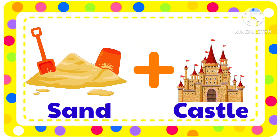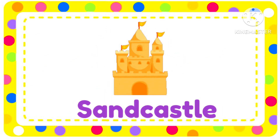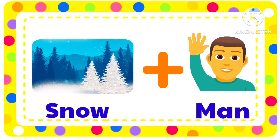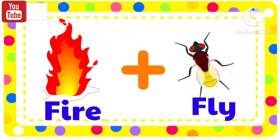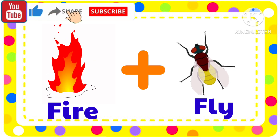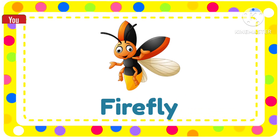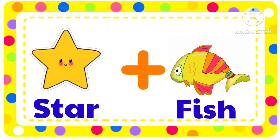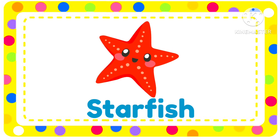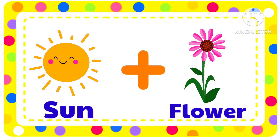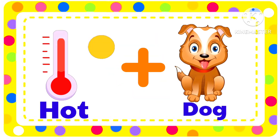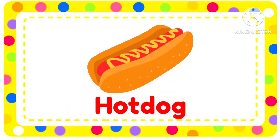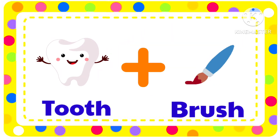Sand plus Castle — Sandcastle. Snow plus Man — Snowman. Fire plus Fly — Firefly. Star plus Fish — Starfish. Sun plus Flower — Sunflower. Hot plus Dog — Hot dog. Tooth plus Brush — Toothbrush.